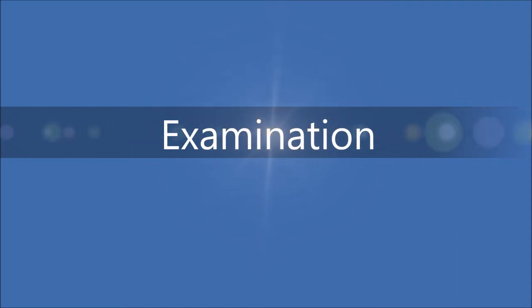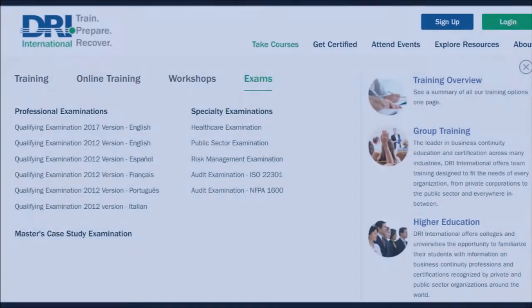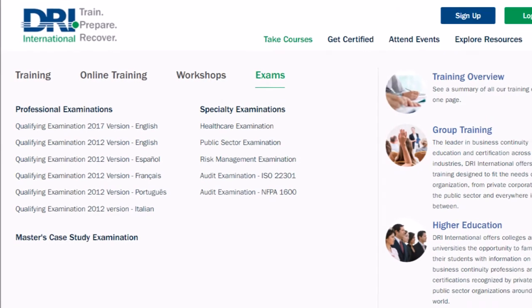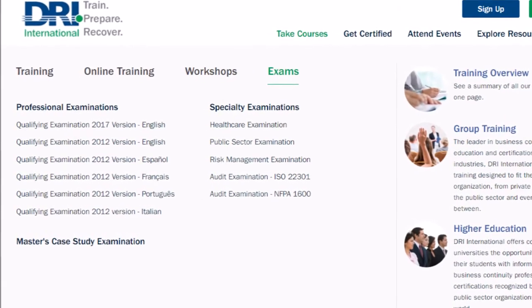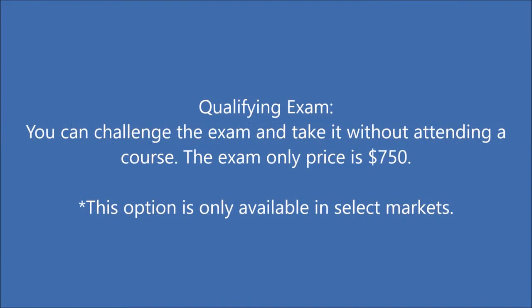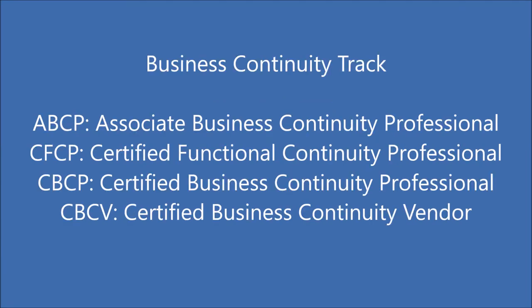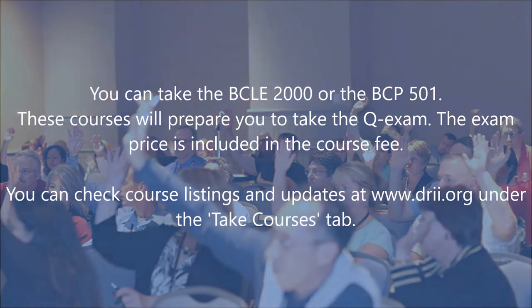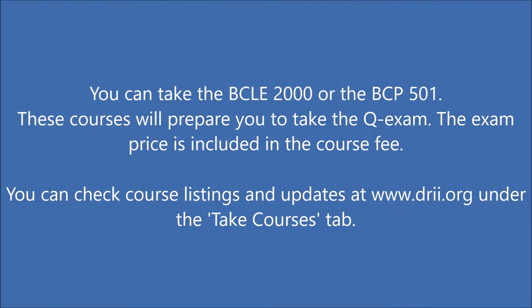Step 1: The Exam Process. There are different examinations for each of the certification tracks. The qualifying examination, or the Q exam, is the required test for all certifications falling under the business continuity track. We will focus on this exam and related certifications in this video. You have two options for taking the qualifying examination: you can either take the exam without taking a course, or you can take one of two courses to prepare for the Q exam.